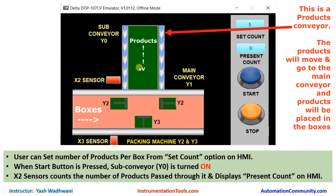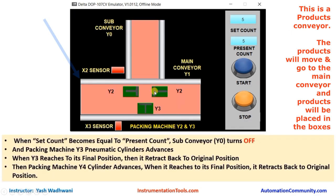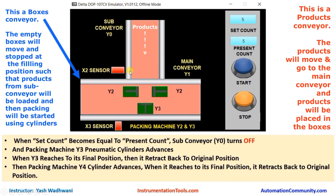When the product passes through this conveyor, the X2 sensor will sense the product and increment the current value of the counter. Finally, when the current value of the counter becomes equal to the set count set by the user, the sub conveyor Y0 will stop.